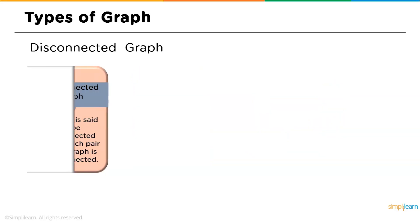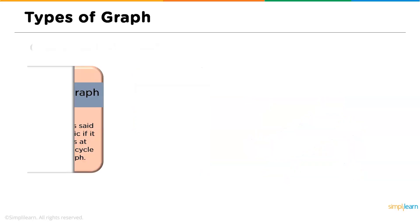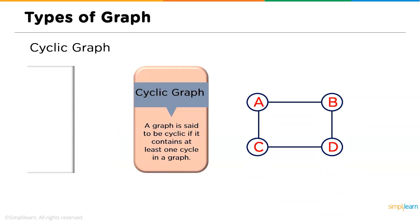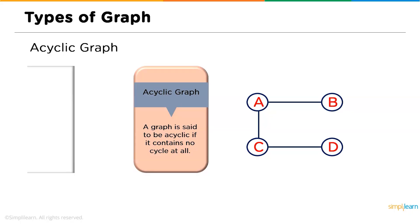Followed by connected graph we have the disconnected graph, which is the typical opposite — a graph is said to be disconnected where each pair of vertices is not connected to each other. Next we have the cyclic graph: a graph is said to be cyclic if it contains at least one cycle, meaning you can traverse A to C, C to D, D to B, and B back to A again. Finally, the acyclic graph is the opposite — here you cannot traverse back to A again, so the complete cycle is not available. These are called acyclic graphs.